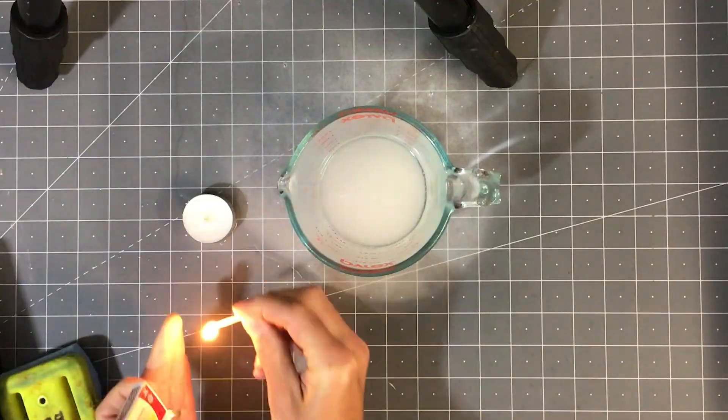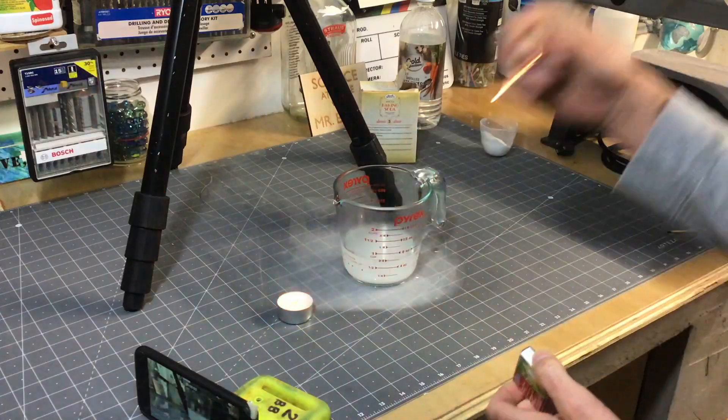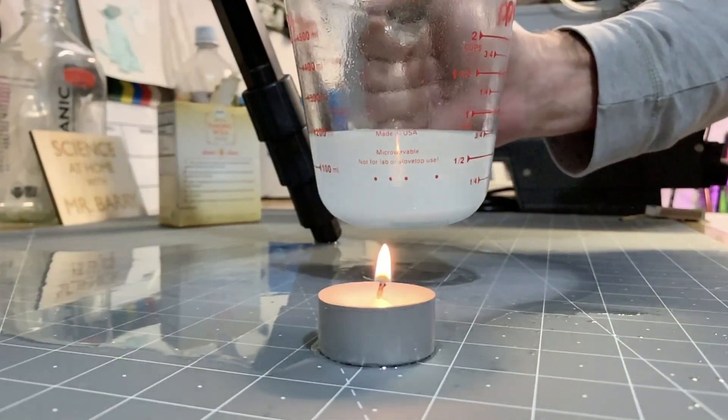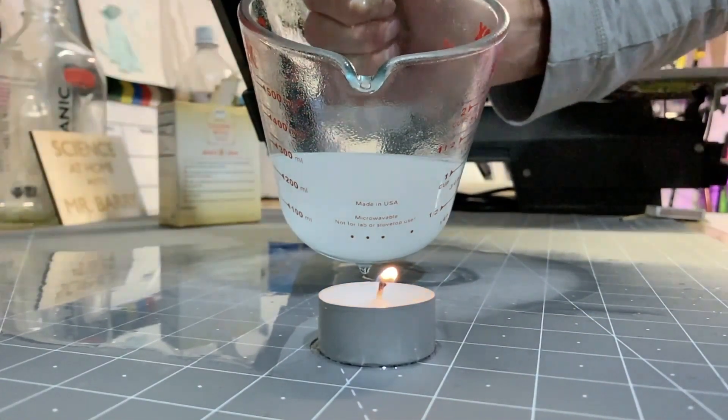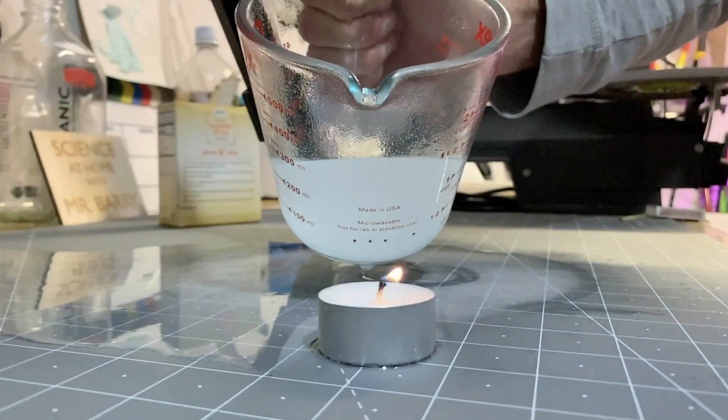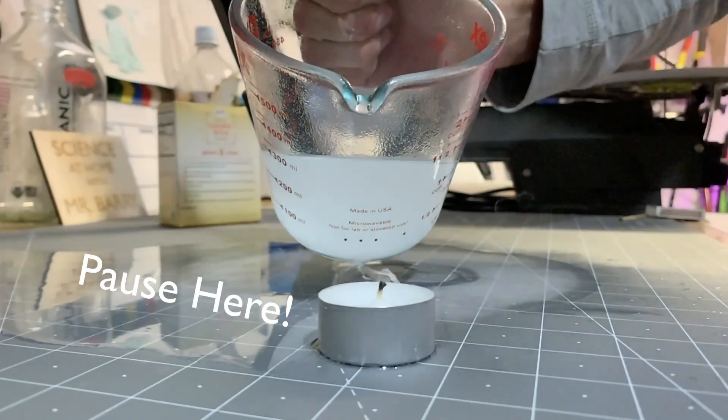So after it settles down here, what we're going to do is light a match and light our candle, and then we're actually going to pour the gas from the reaction onto our candle, and as you see, the candle's going to go out.